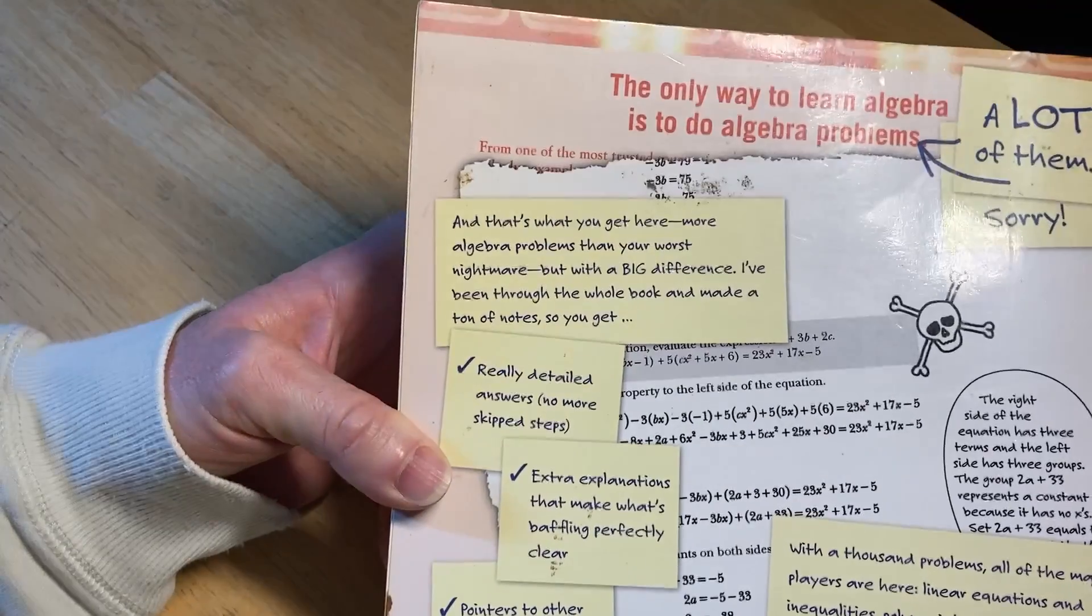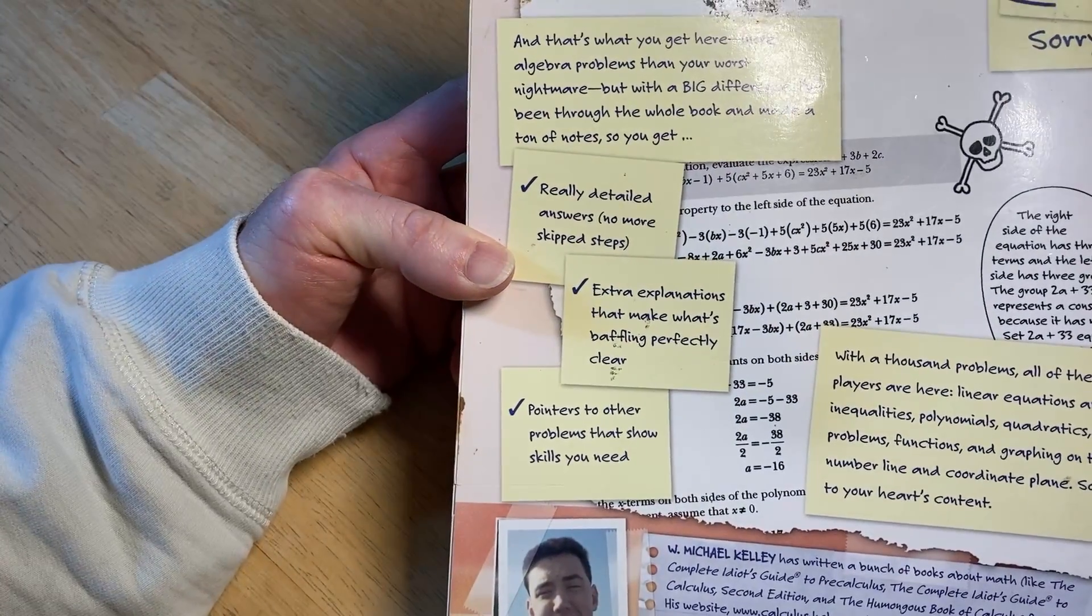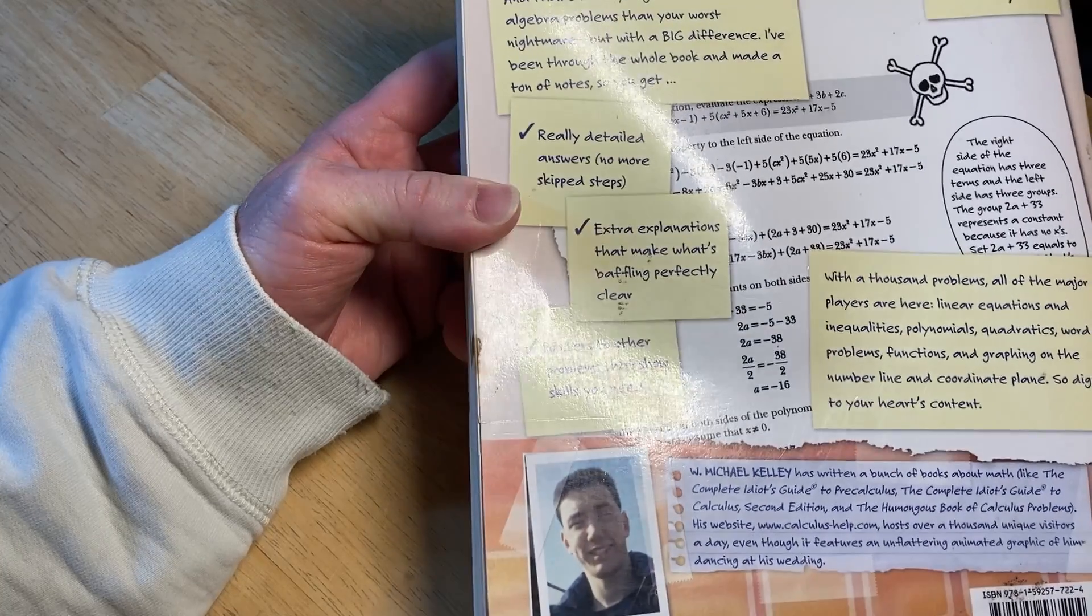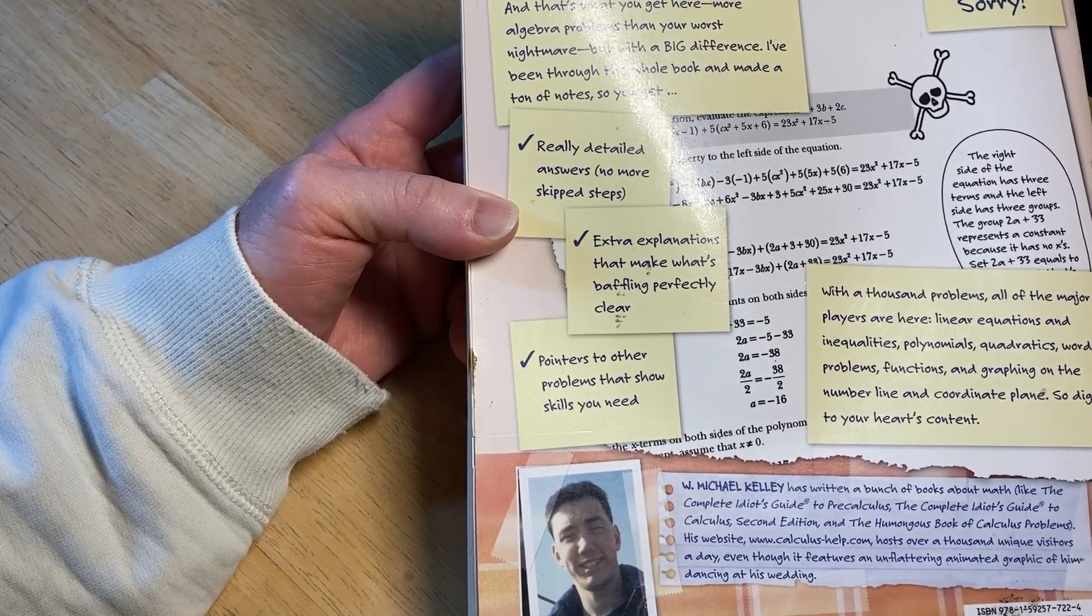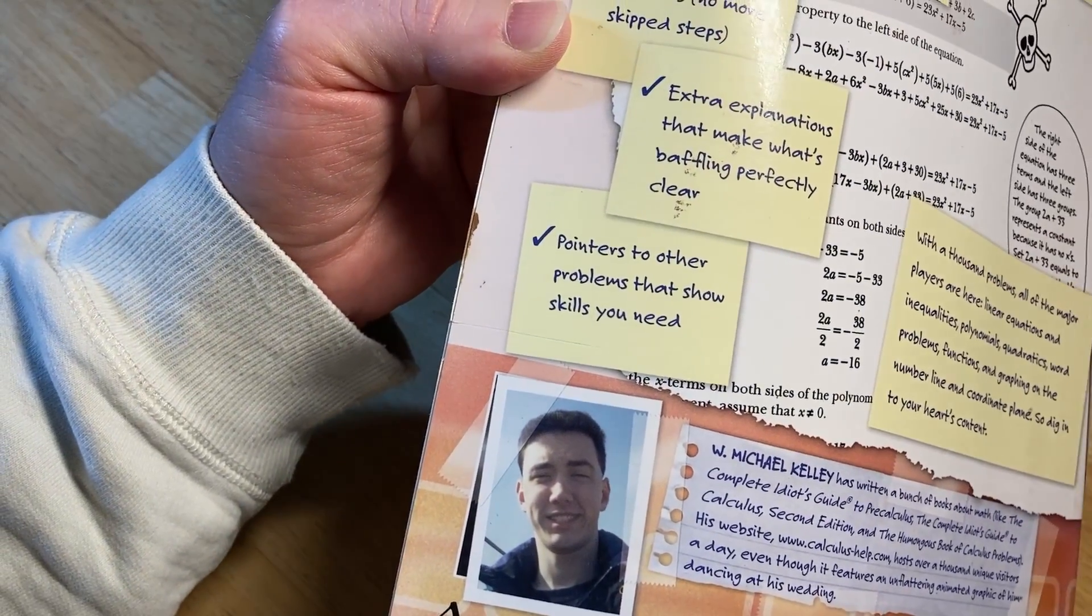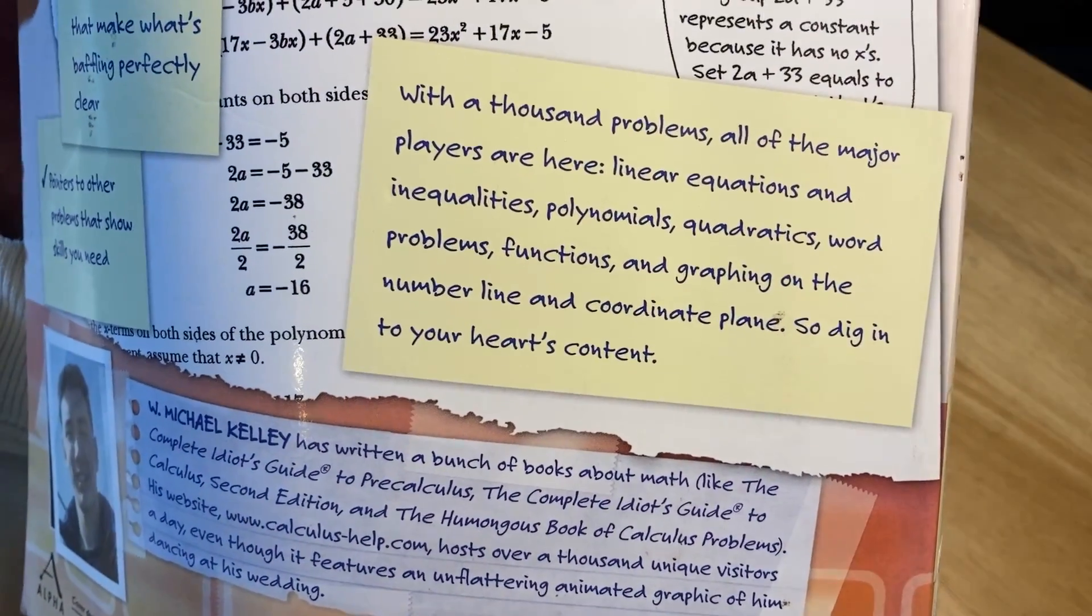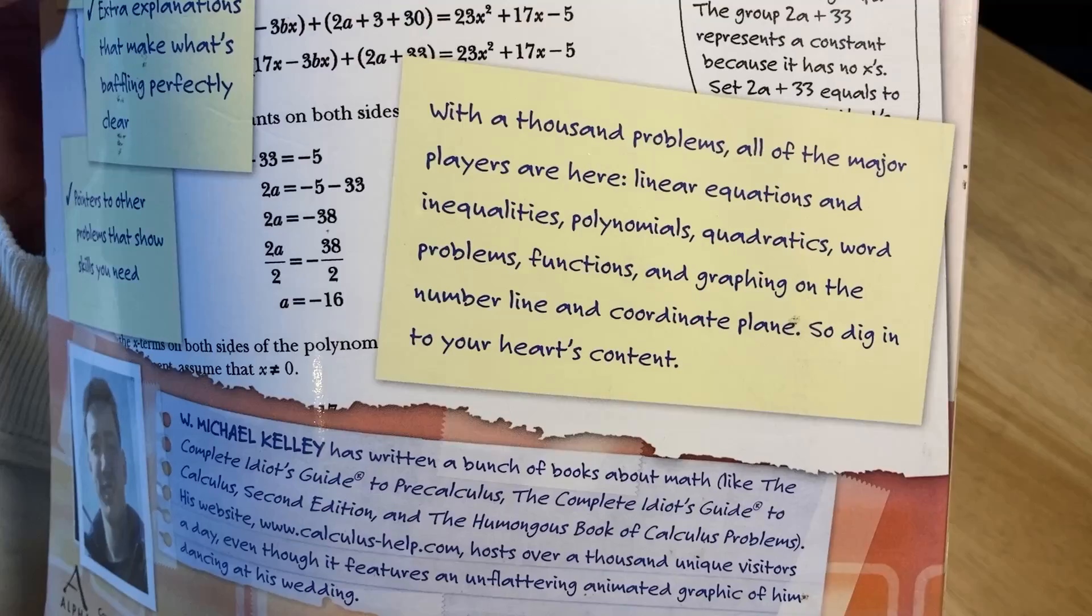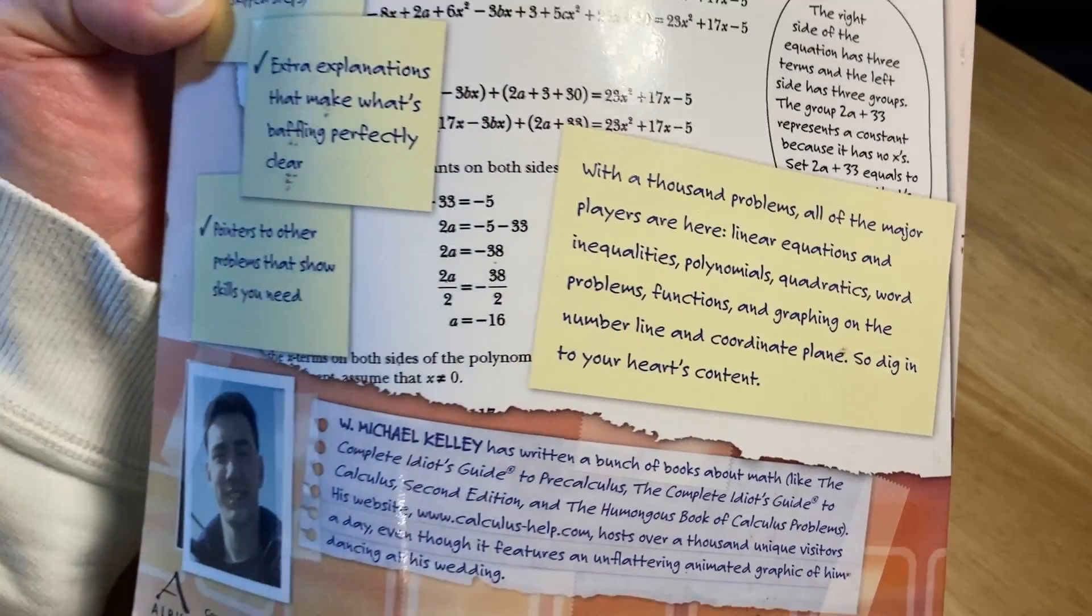But with the big difference: I've been through the whole book and made a ton of notes. You get really detailed answers, no more skipped steps, extra explanations that make what's baffling perfectly clear. Pointers to other problems that show skills you need. With a thousand problems, all the major players are here: linear equations and inequalities, polynomials, quadratics, word problems, functions and graphing on the number line.